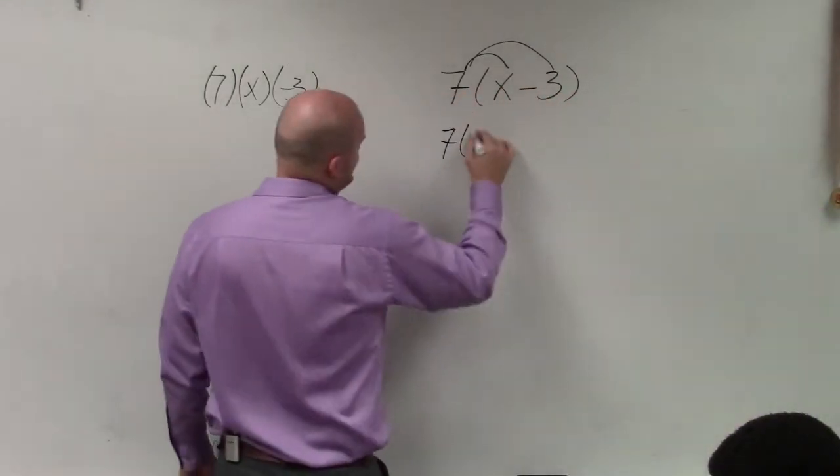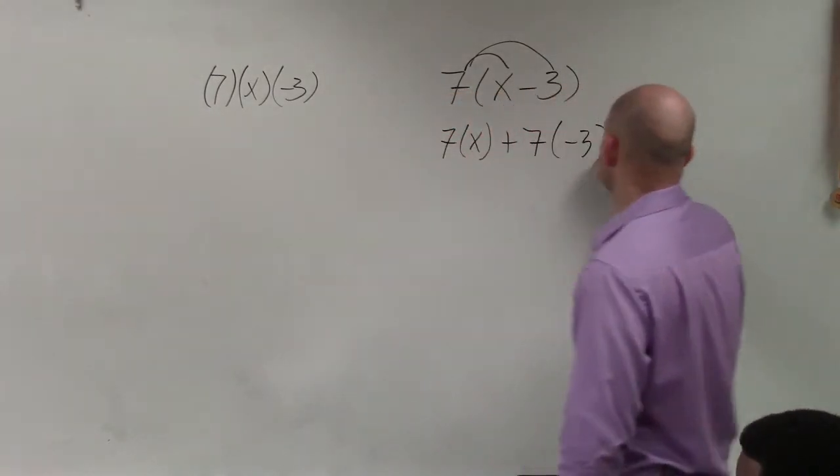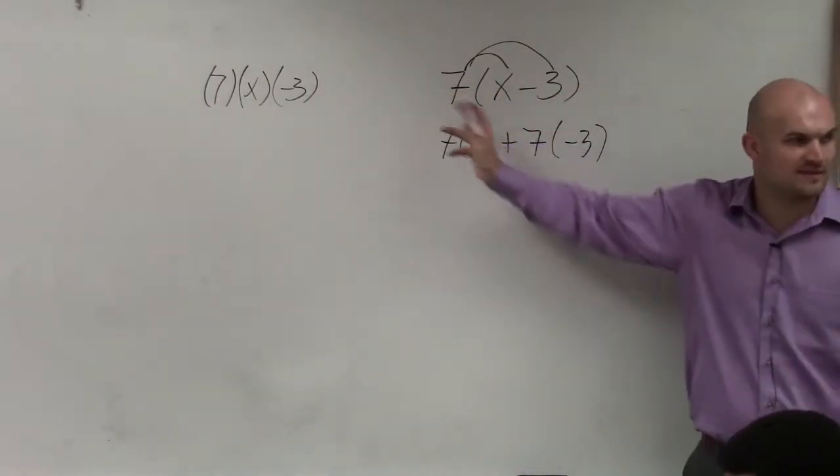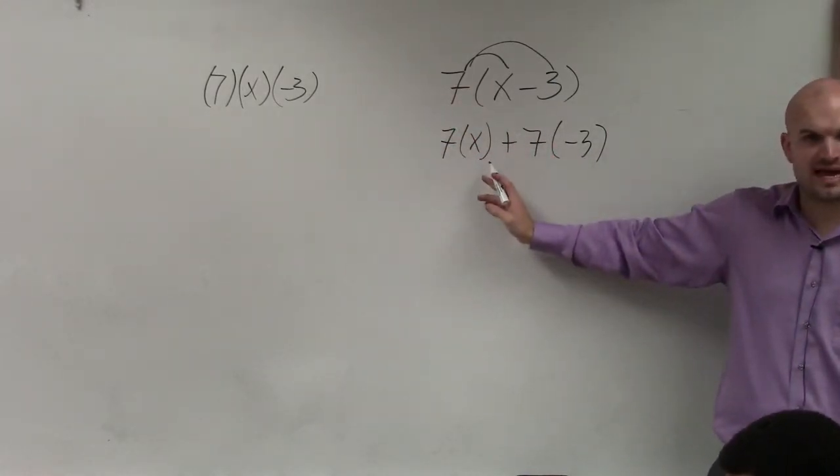So it looks something like this: 7 times x plus 7 times negative 3. That's a positive 7, that's why I wrote plus.